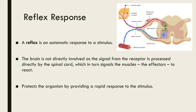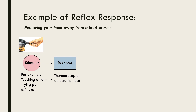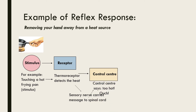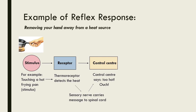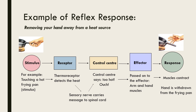In a reflex action, a particular stimulus produces the same response every time. In humans, an example is the quick withdrawal of your hand if it touches something hot. Here the stimulus is touching a hot frying pan. This heat is detected by thermoreceptors in the skin, which rapidly relay this information via a sensory neuron to the spinal cord. The spinal cord acts as the control centre, interpreting that the temperature is too high and determining that the appropriate response would be to withdraw the hand from the frying pan. This information is then transmitted to the effector via a motor neuron — in this case, the effector will be muscles in the arm and hand. These muscles then bring about the response, which is to withdraw the hand from the hot frying pan.